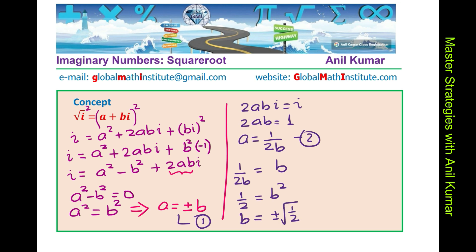So, that becomes the value of b. So, the value of b could be plus or minus 1 over square root of 2. Now, you know, a is equal to plus or minus b value and therefore, we have both the values. So, now, we can write down our solution.